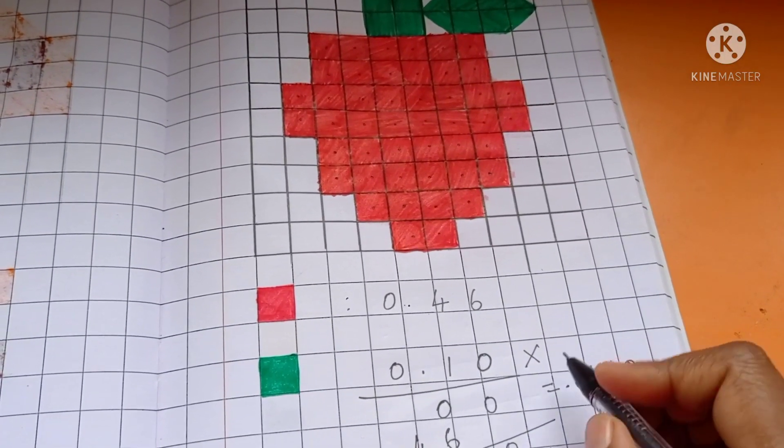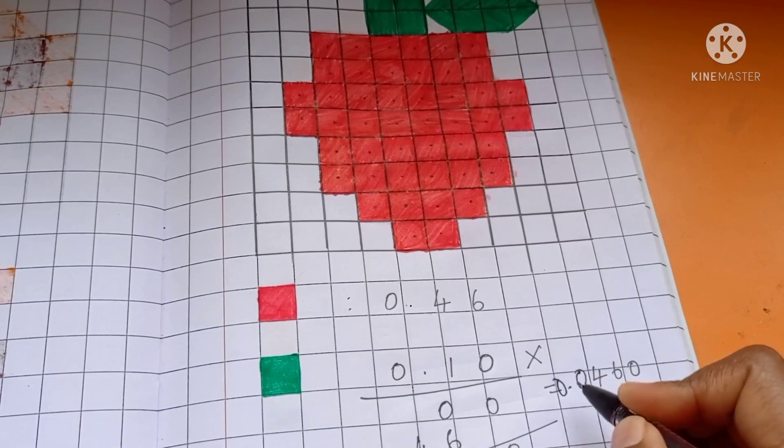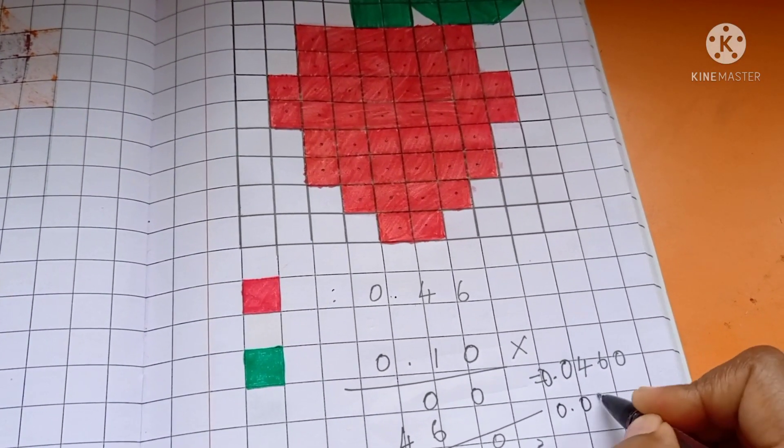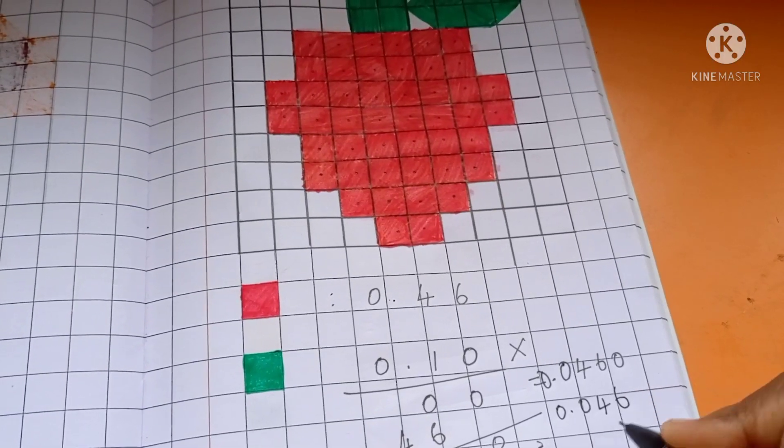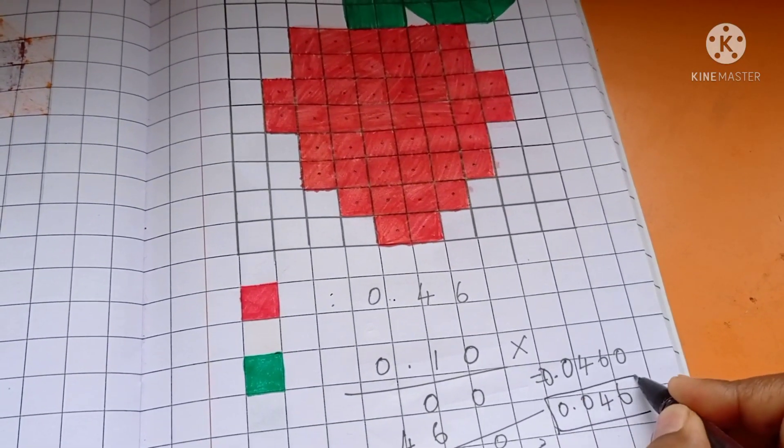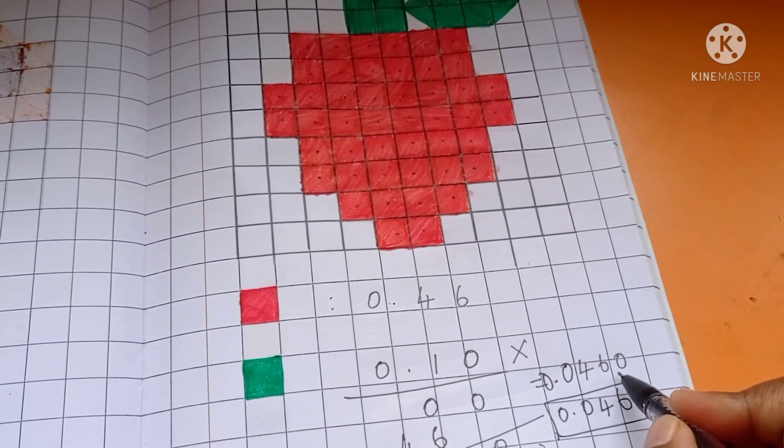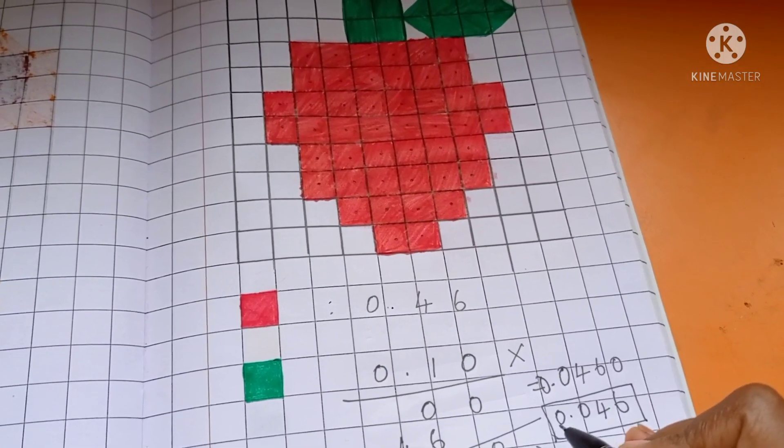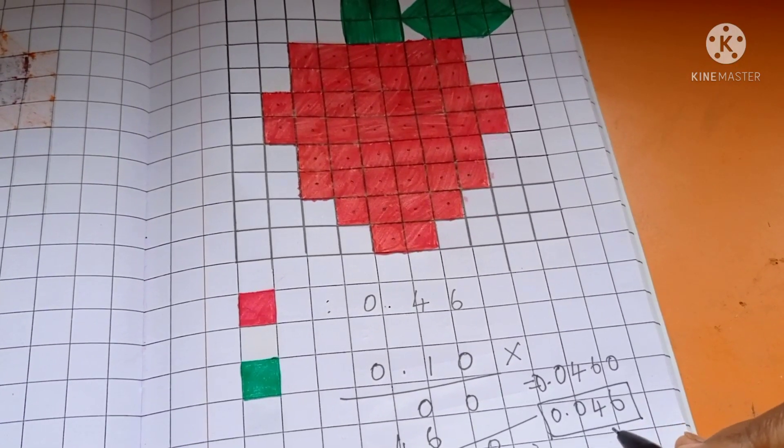Fourth number you can add 0 before. So point 0. There is no whole number. So you have to write answer 0.046 is the answer. This 0 doesn't have value. You can skip the 0. Answer is 0.046.